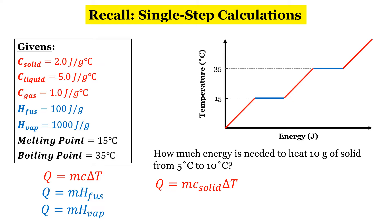In the question, we're given the mass. In our givens, we have the specific heat capacity of the solid, and then the change in temperature going from 5 to 10 is only 5 degrees Celsius. So let's go ahead and plug all that in. So using a calculator, 10 times 2 times 5 gives us a final answer of 100 joules. Piece of cake, right?